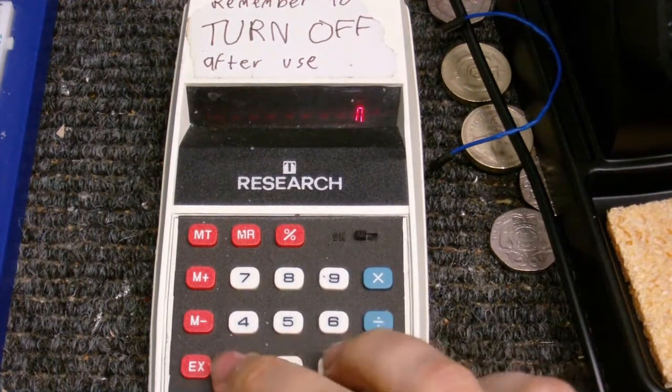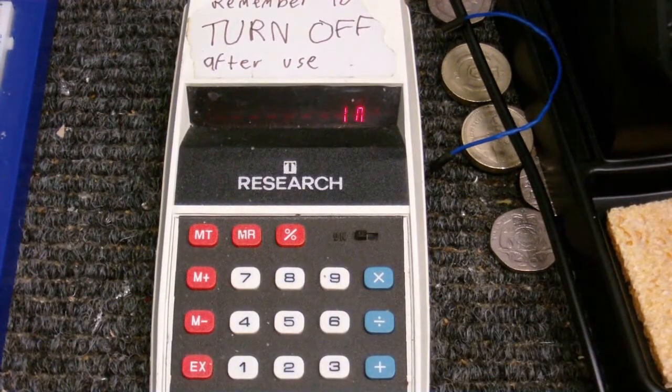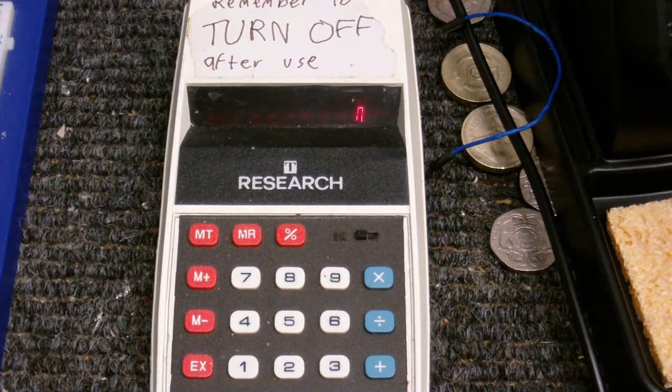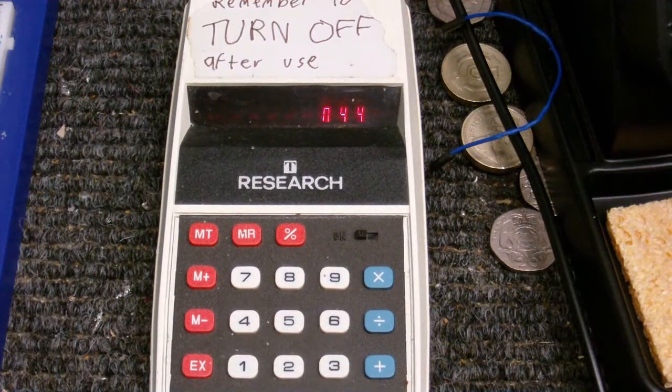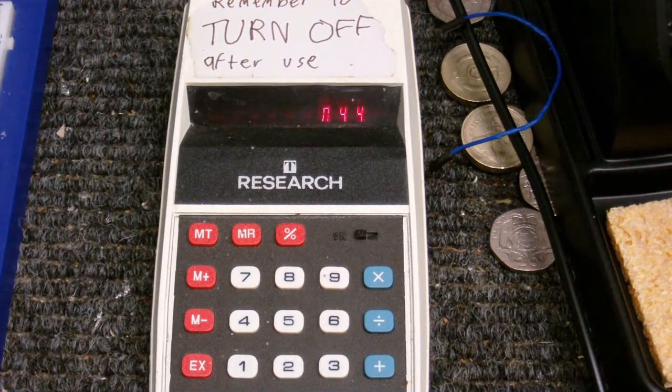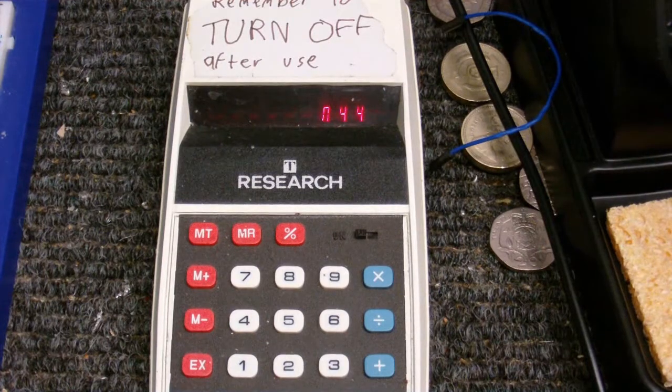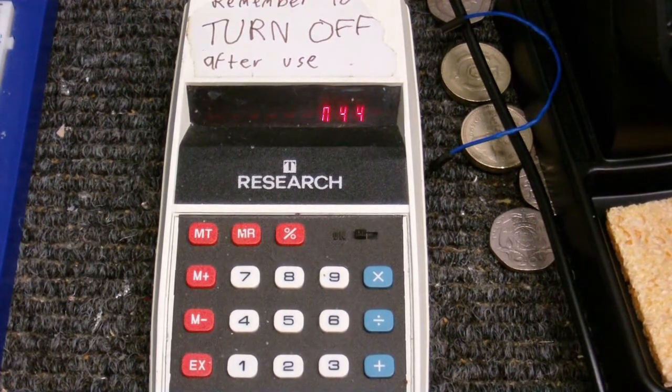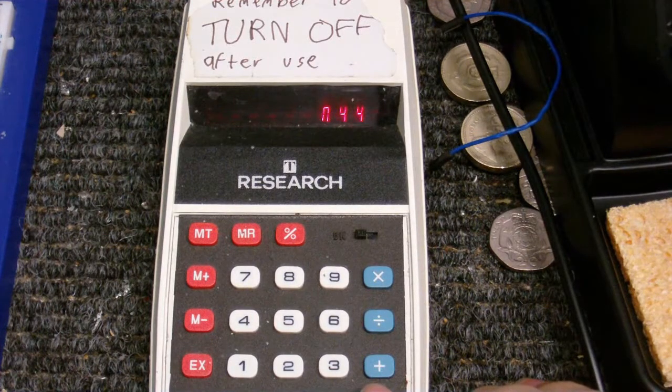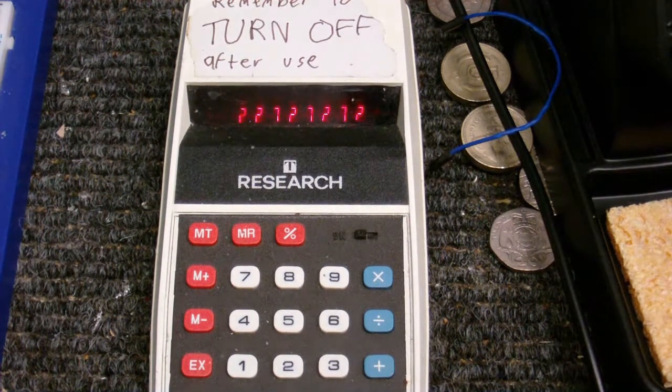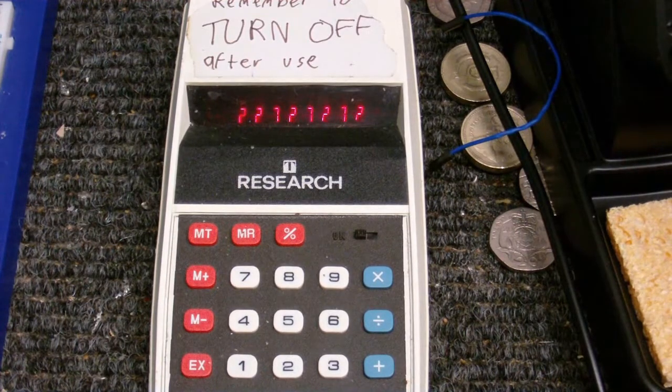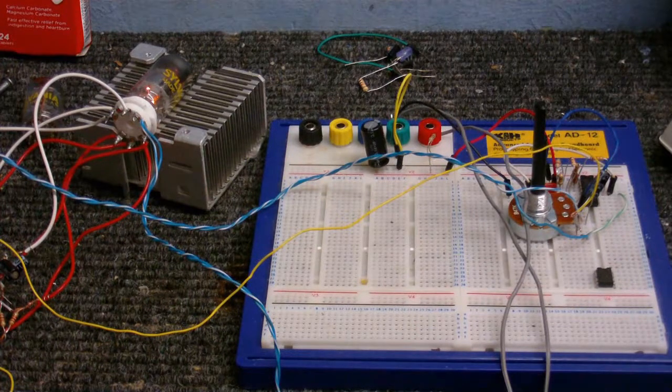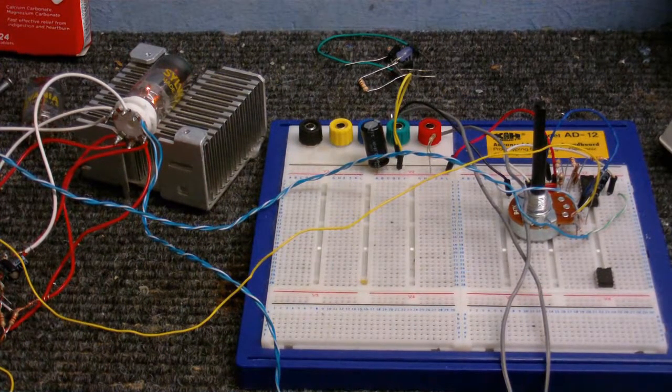We're getting about 10 volts peak to peak out of the tube which is really good, much more than the other tube. I've got about 0.44 volts going in and about 10 volts coming out. Let's crunch some numbers. 10 volts divided by 0.44 volts gives us 22 times amplification. That's actually pretty reasonable.